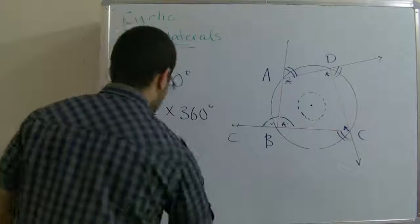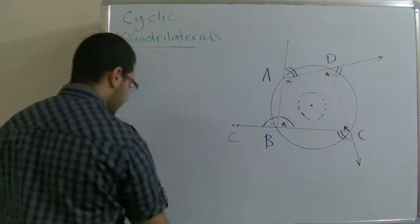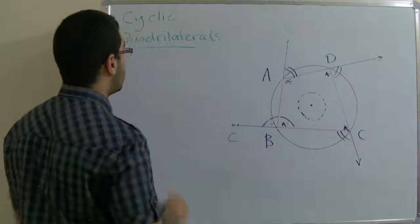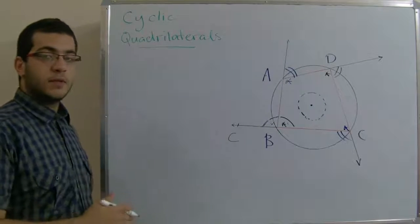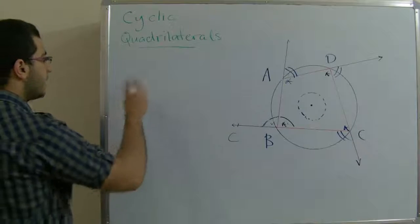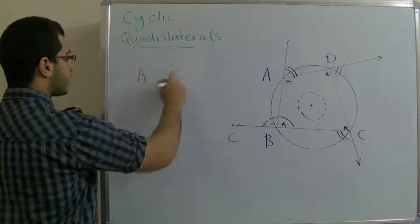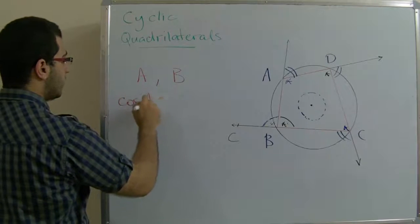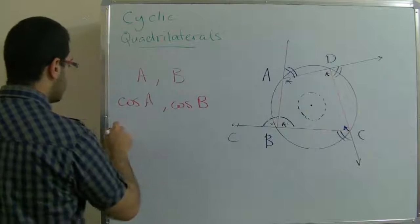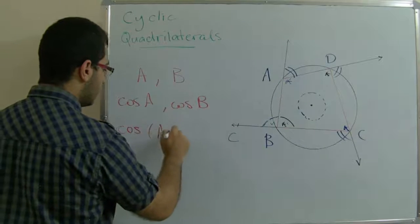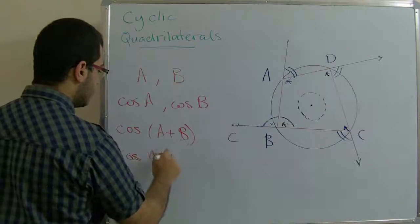What we will use this for is to prove the trigonometric functions for the sum and the difference of two angles. What I mean by this is, if we have two angles A and B, we know cosine A, we know cosine B, and we want to get cosine of A plus B, or cosine of A minus B.